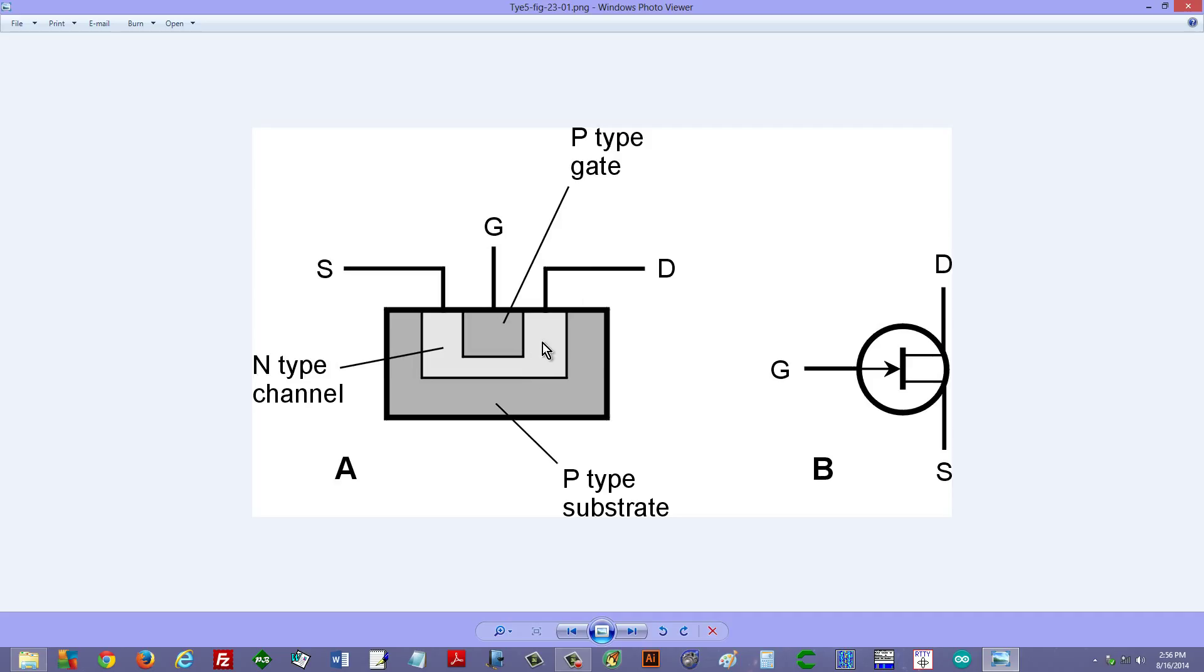Now they could call this a PNP device, but to differentiate it from a bipolar transistor, they call it an N channel device. Here's the schematic symbol for it. Notice that the arrow points in towards the N type material and away from the P type material. But no current should flow in the gate of a device like this, little or no current. So this is kind of academic.